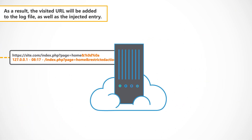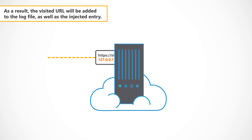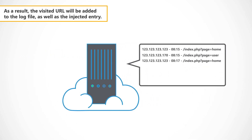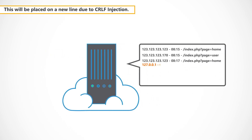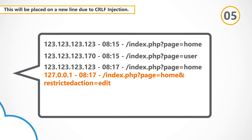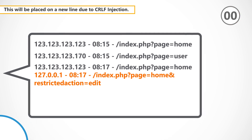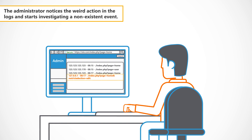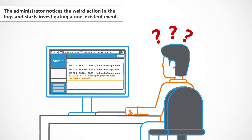As a result, the visited URL will be added to the log file, as well as the injected entry. This will be placed on a new line due to CRLF injection. The administrator notices the weird action in the logs and starts investigating a non-existent event.